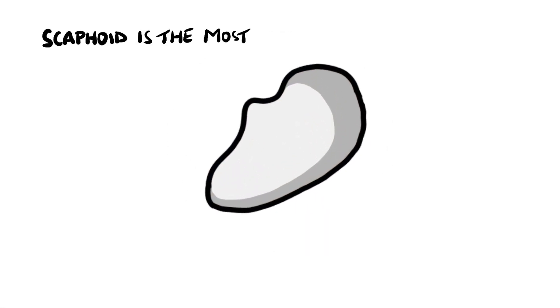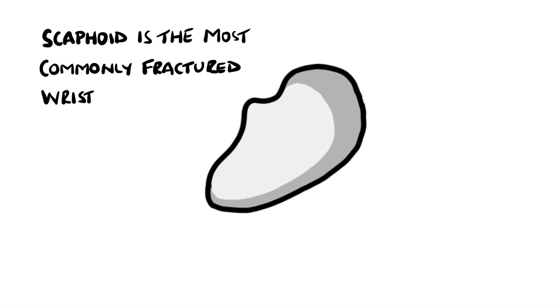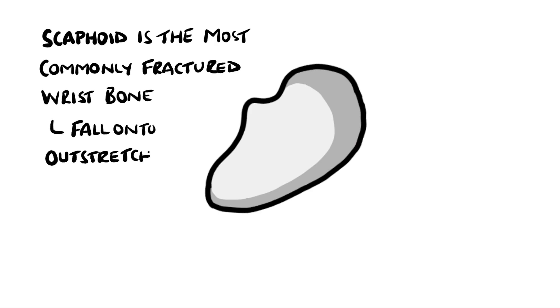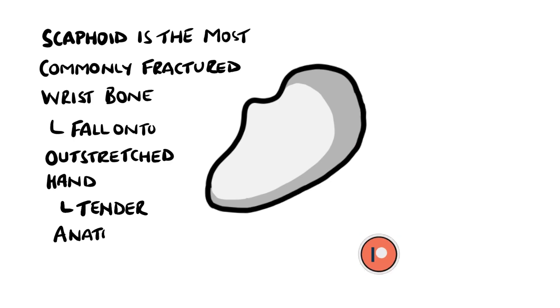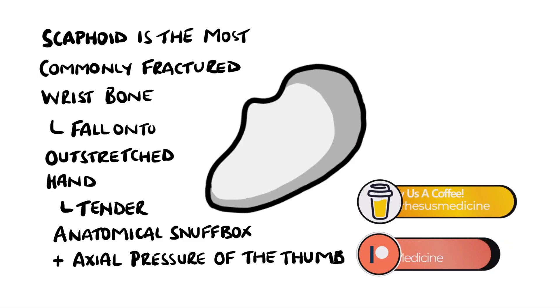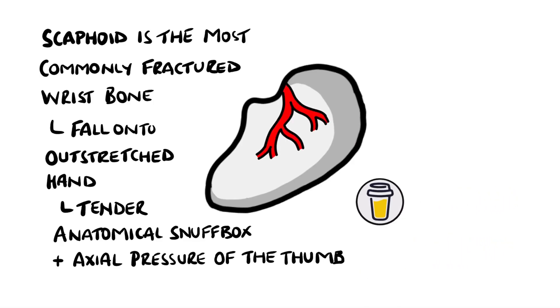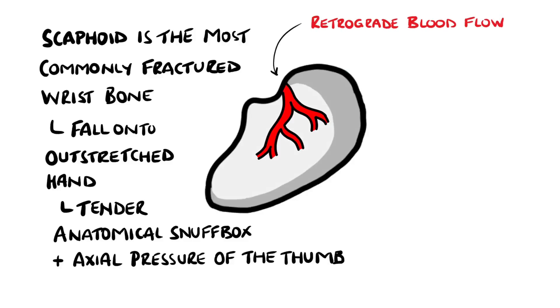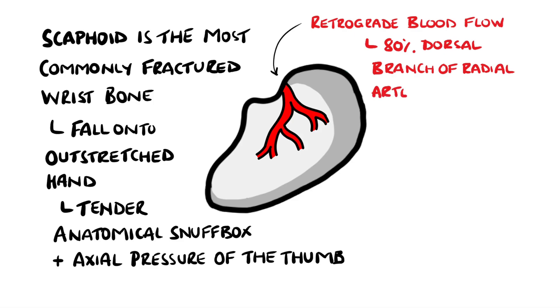The scaphoid is the most commonly injured bone of the wrist, usually from a fall onto an outstretched hand. It is associated with pain in the anatomical snuff box and with axial pressure applied on the thumb. It is also famous for having a risk of avascular necrosis, because it has a retrograde blood supply — meaning blood flows from its distal end towards its proximal end. This is mostly from the dorsal branch of the radial artery.